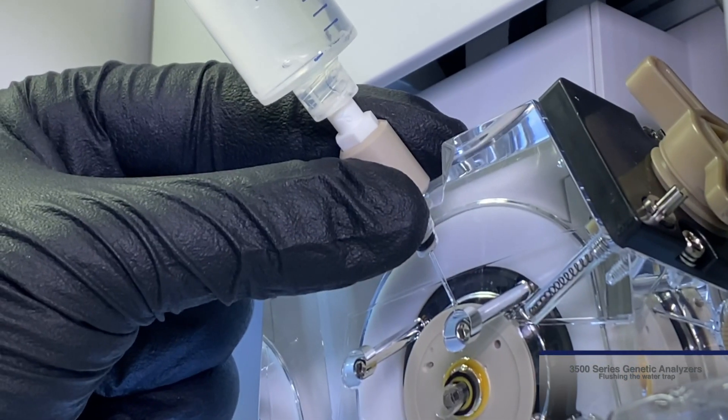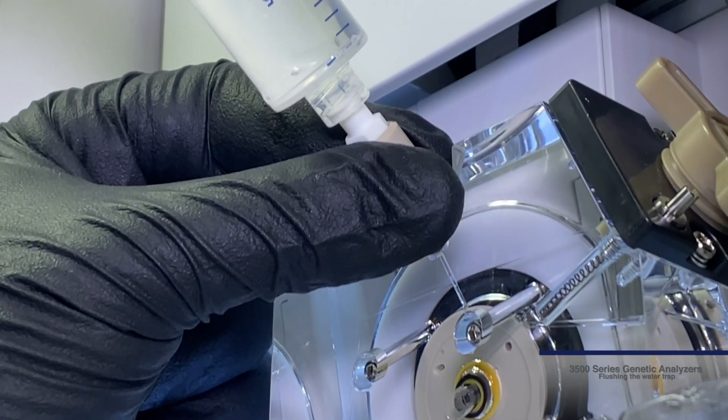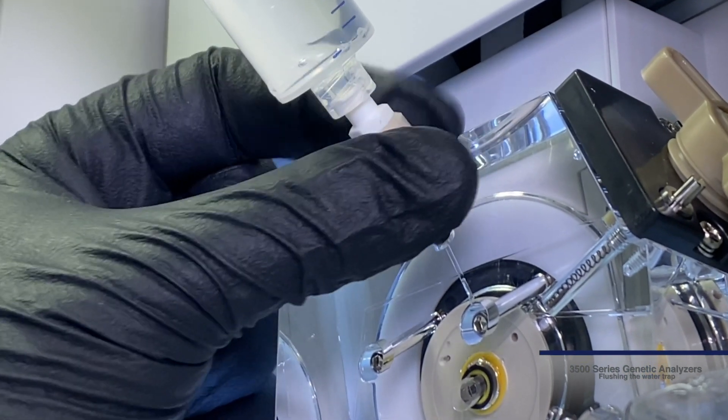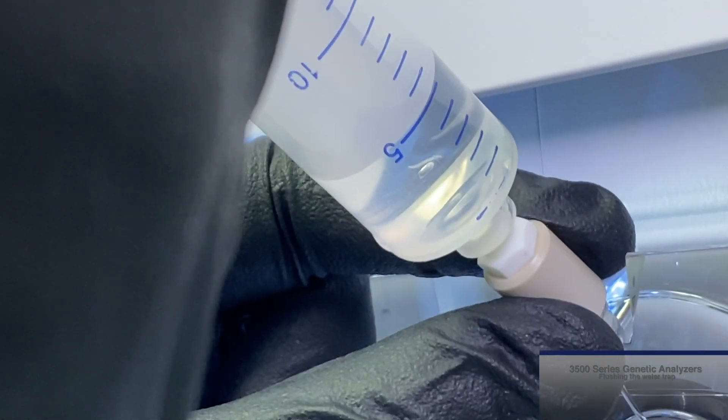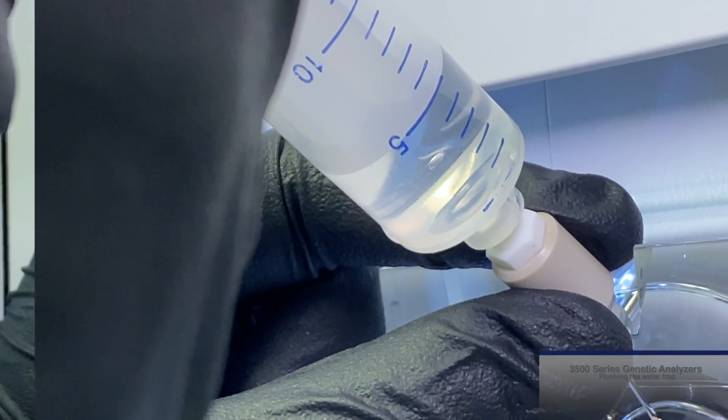Next, open the lure fitting by grasping the body of the fitting and turning counterclockwise approximately one half turn. Once this is done, depress the plunger to run 5 to 10 milliliters of water through the system.